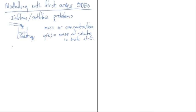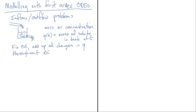The approach is to fix a delta t and eventually let it go to zero. We think of delta t as being as small as we want but for now fix it at some small finite amount. We want to add up all changes in q throughout that delta t. Let's do the simple case with pure water flowing in — no solute — and a well-mixed solution flowing out.